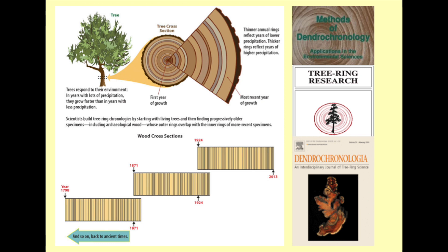Taking tree ring records from individuals with overlapping lifespans, we can compare the tree ring records to reconstruct environmental conditions going backward in time. If we are confronted with an undated tree ring record, we can compare it with the existing record and see where in that sequence it fits. The species of tree and its place of growth must be carefully determined, and that place of growth may be very remote from the recovery location, due to trade or transport.